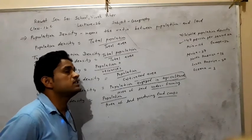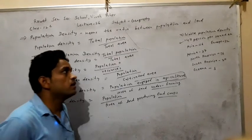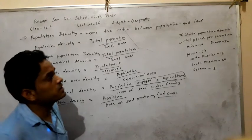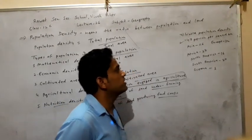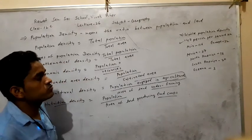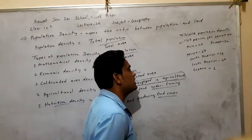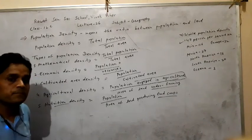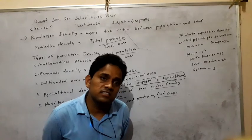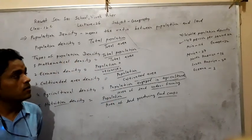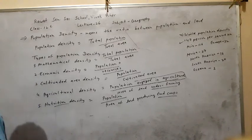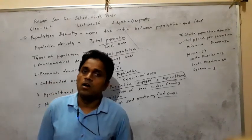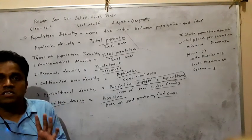Highest population density is found in the continent of Asia: 160 persons per square kilometer. In Europe, population density is 32 persons per square kilometer. In Africa, 27 per square kilometer. In North America, 16 per square kilometer. In South America, 20 per square kilometer. In Oceania, 3 per square kilometer. The highest population density by country is found in Monaco and Macau.